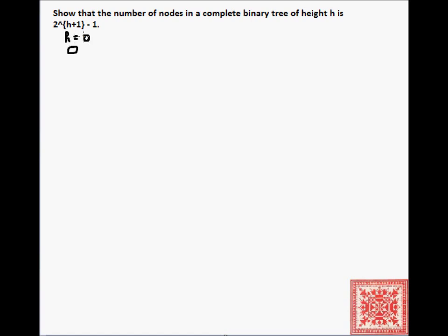This is a complete binary tree of height 0 — it consists of only one root node. This is a complete binary tree of height 1. And this is a complete binary tree of height 2.